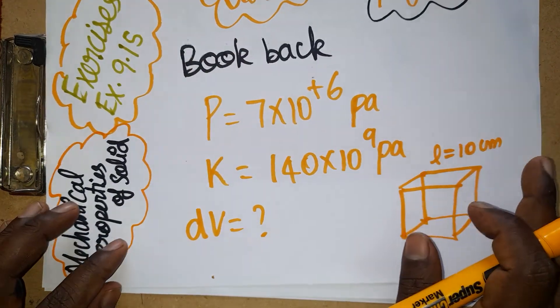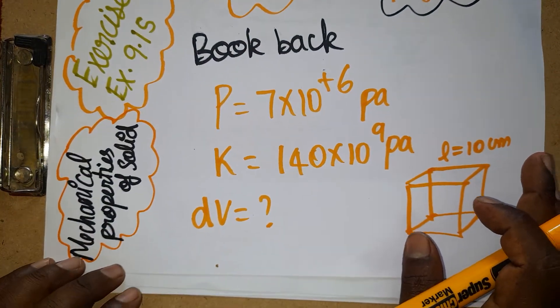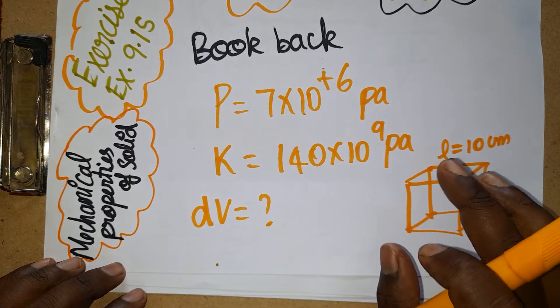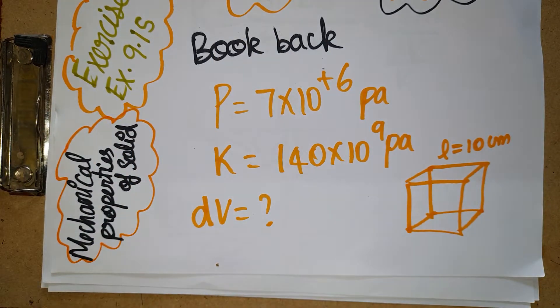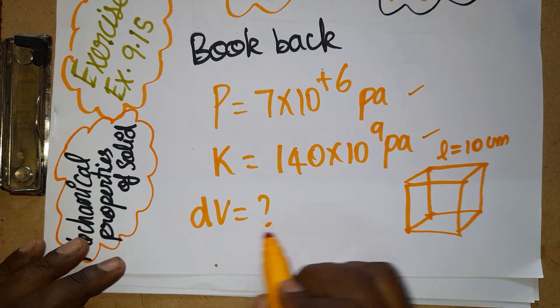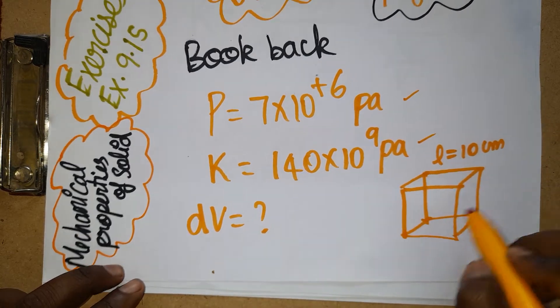This is the 15th problem from Chapter 9, Class 11 Physics on mechanical properties of solids. We are going to find the changing volume. Pressure is given, bulk modulus is given, and we need the changing volume.